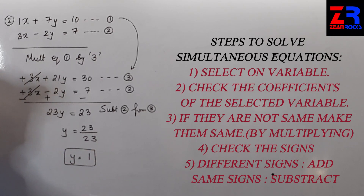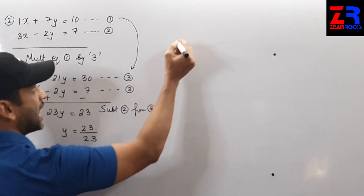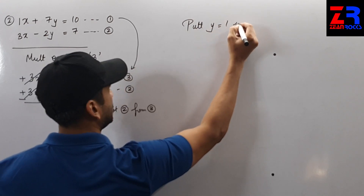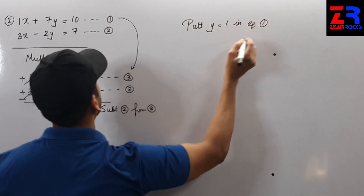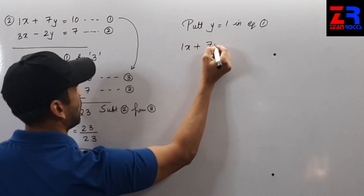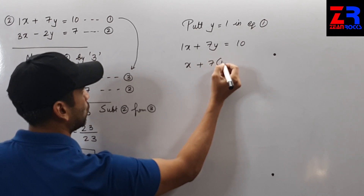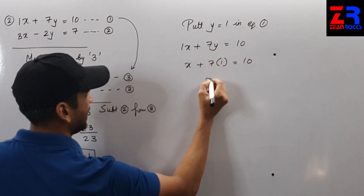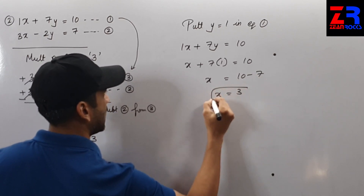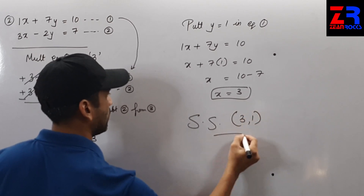I have got y = 1, but this is not the final answer — I need to find x too. Putting y = 1 in equation 1: x + 7(1) = 10, so x = 10 − 7 = 3. The solution set is (3, 1).